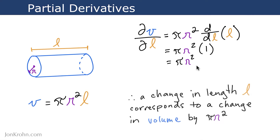What this means is that a change in length l corresponds to a change in volume by pi r squared. So as we vary length, that will correspond to a change in the volume of our cylinder by pi r squared. As this length becomes longer or shorter, the volume changes by pi r squared. Let's do a hands-on code demo where we can see it with some numbers.